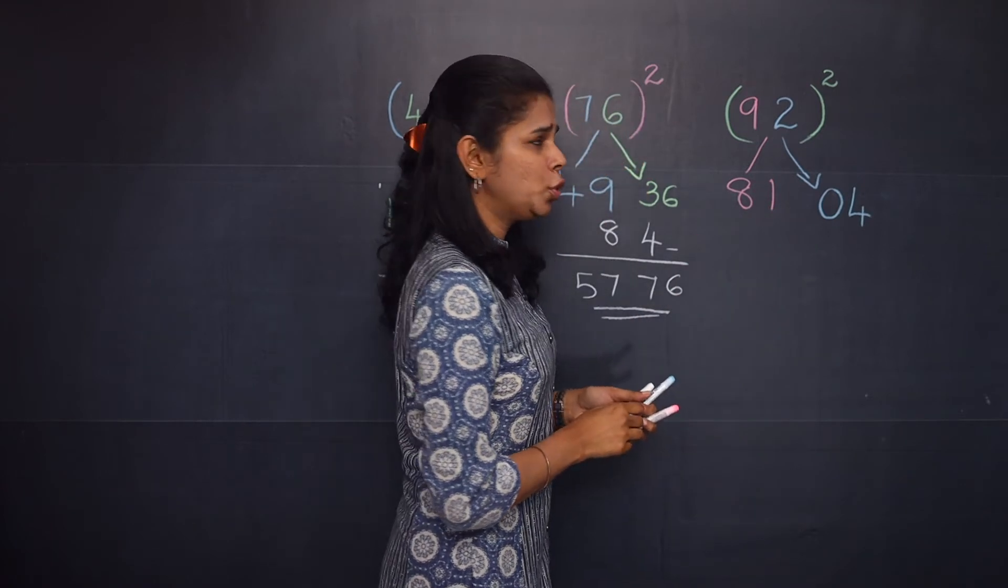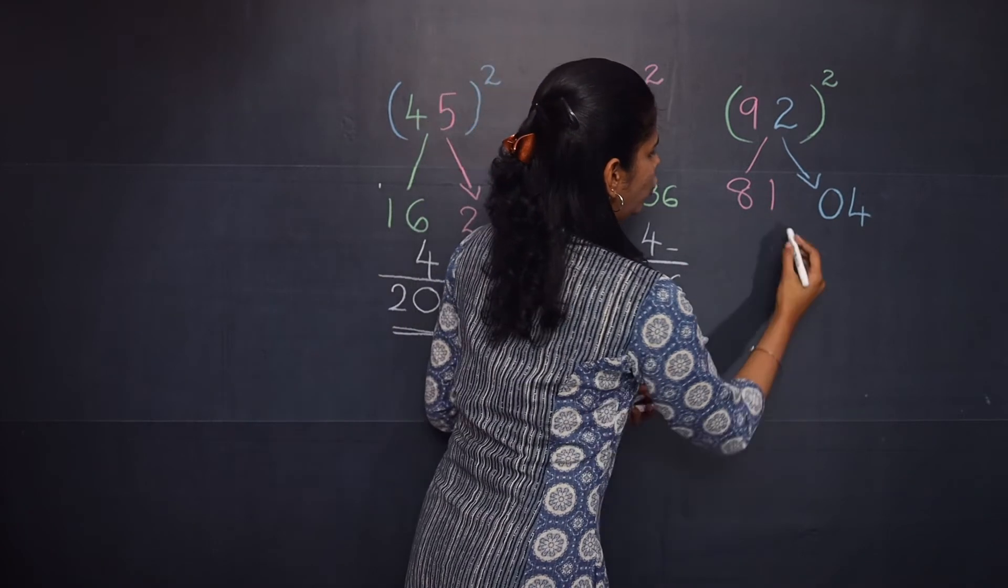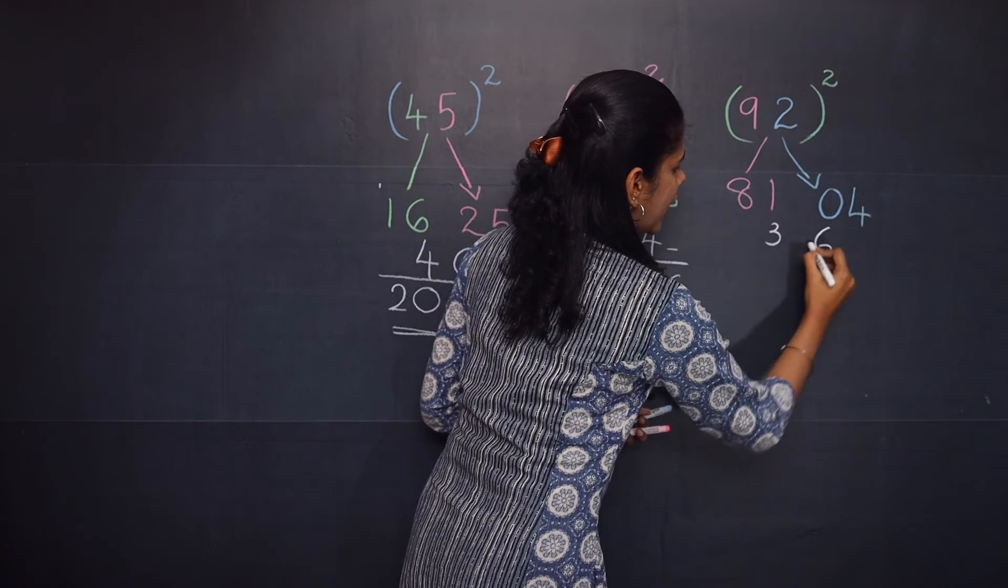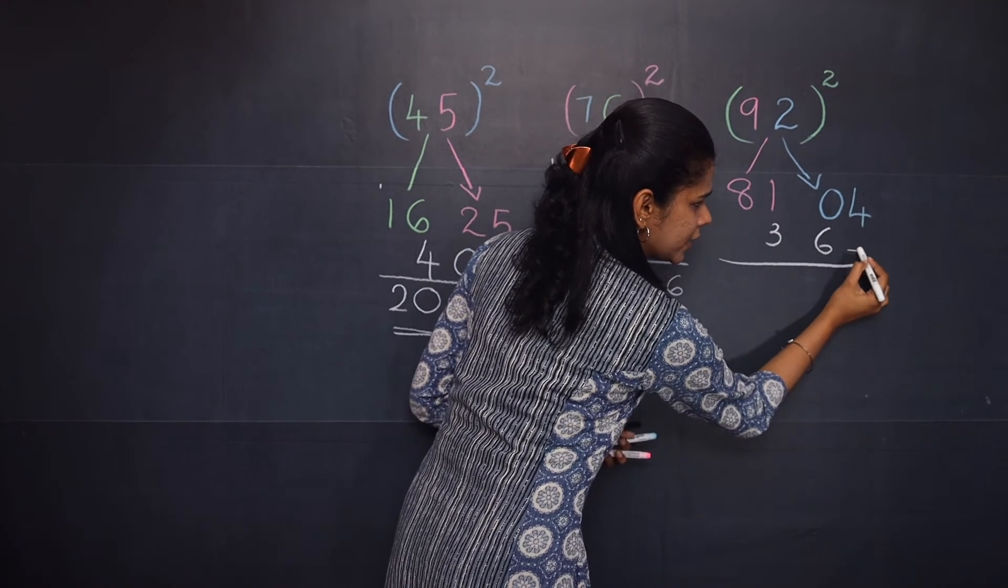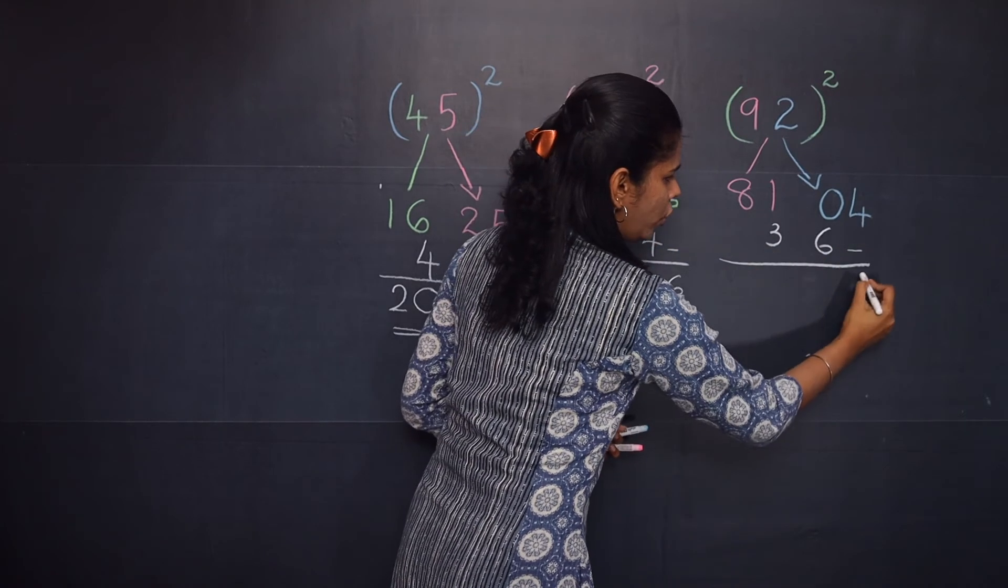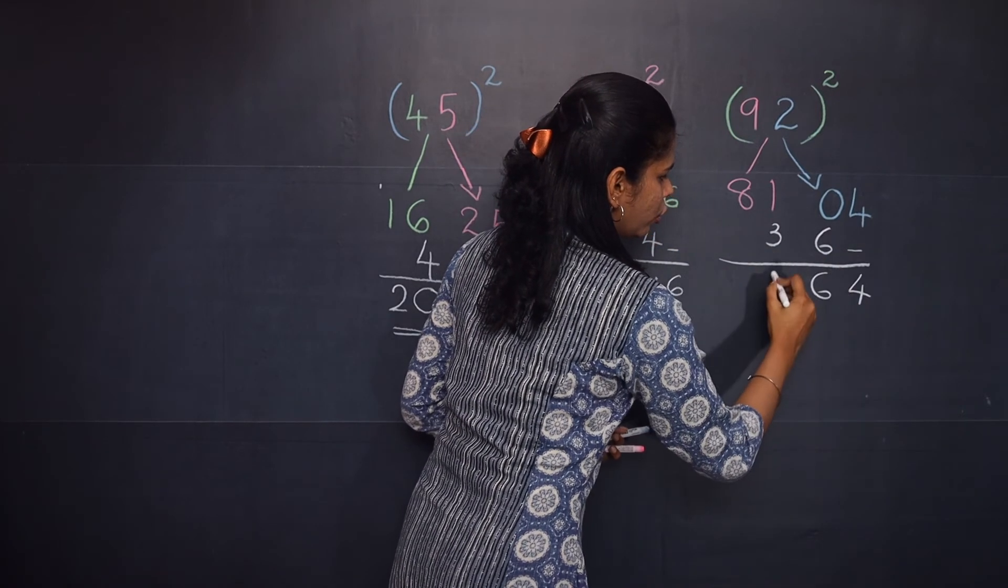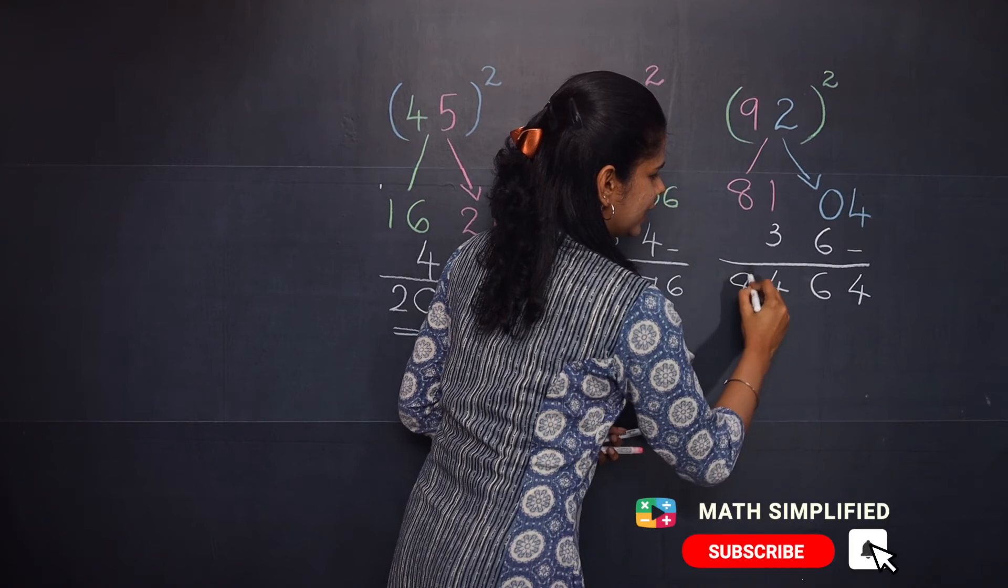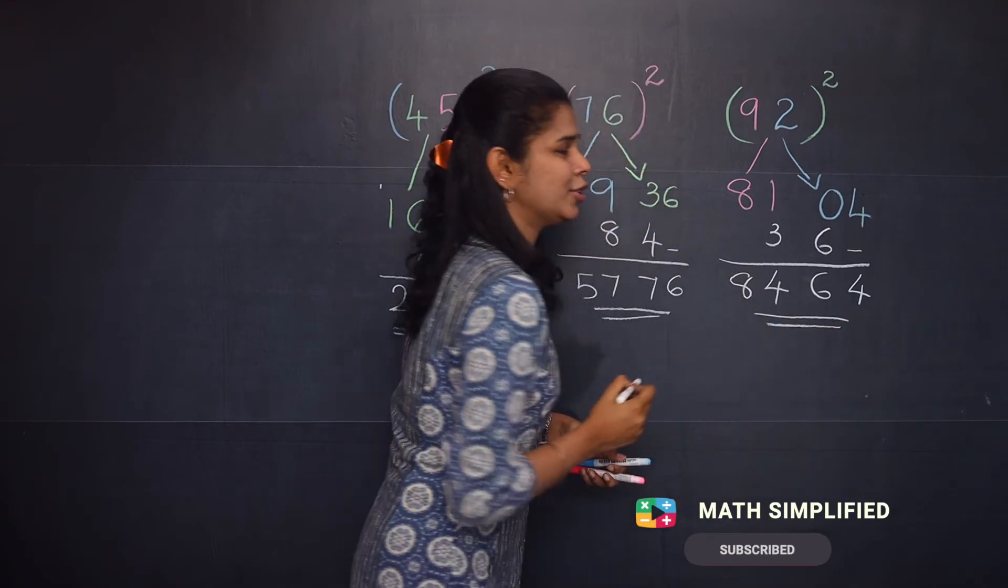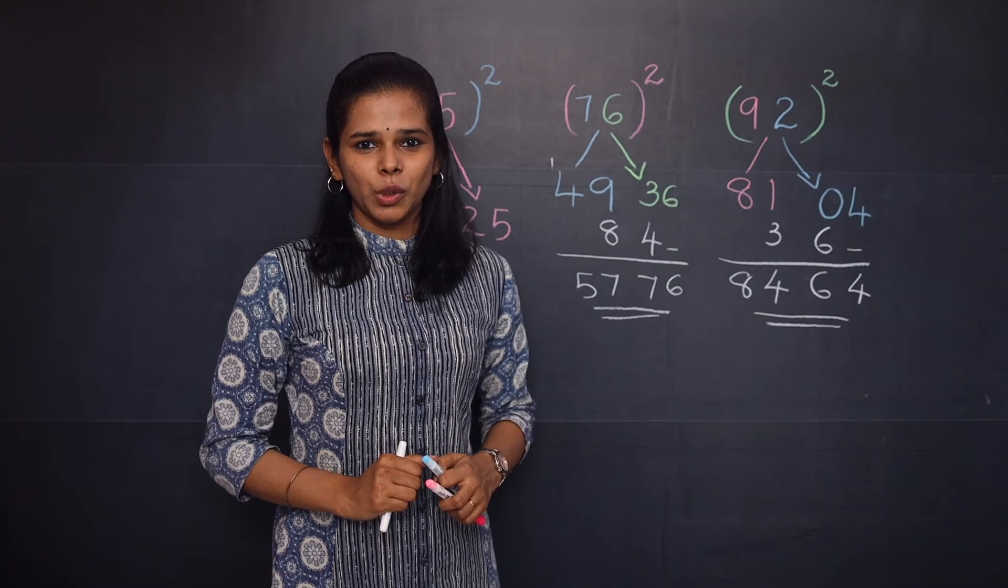Now 9 into 2 into 2 will give you 36, and you will add it. You will keep the space vacant. So 4, 6, 4, 8. So 8, 4, 6, 4 is the answer of 92 the whole square.